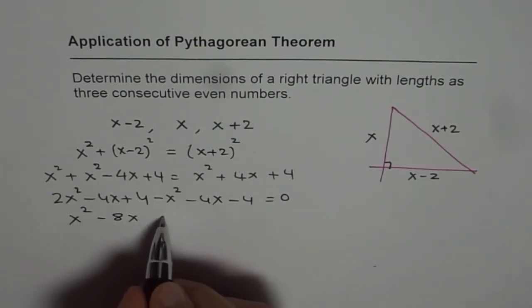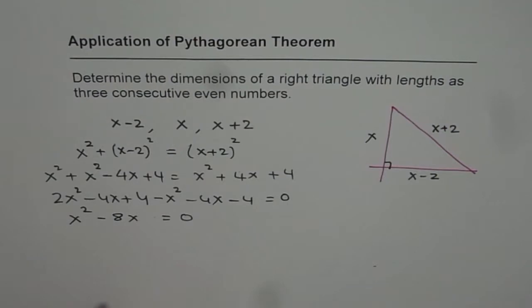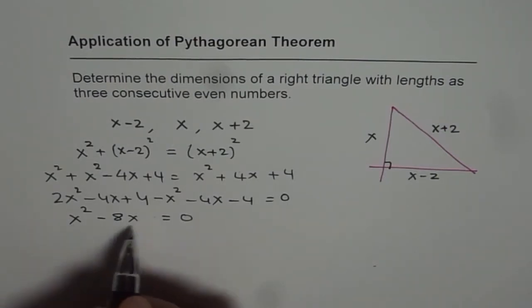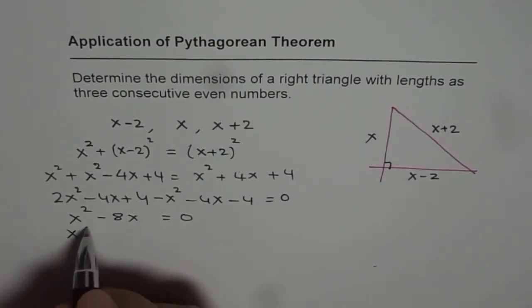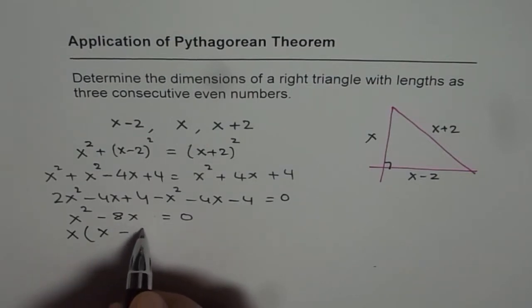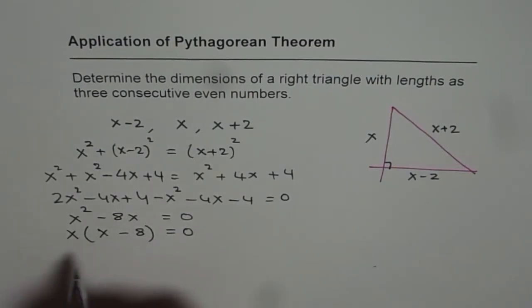So we have x squared minus 8x equals to 0. Now to solve this, we can take x, so it's factor x, we get x times (x minus 8) equals to 0.